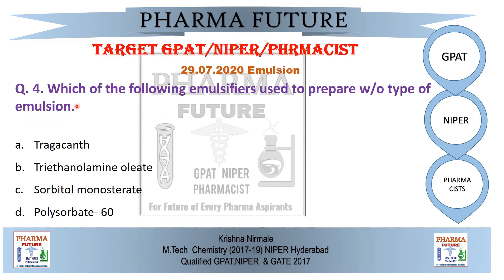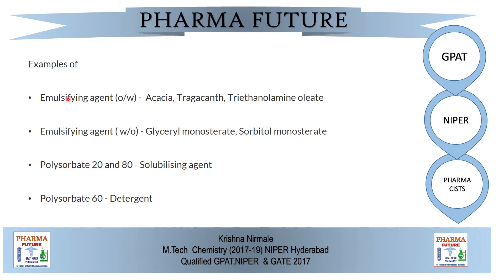Question 4: Which of the following emulsifiers is used to prepare a W/O type emulsion? Option A: tragacanth. Option B: triethylamine oleate. Option C: sorbitan monostearate. Option D: polysorbate 16. Emulsifying agents for O/W emulsions include acacia, tragacanth, and triethylamine oleate. For W/O type emulsions: glycerol monostearate and sorbitan monostearate are used. Polysorbate 20 and 80 act as solubilizing agents, while polysorbate 16 acts as a detergent. Therefore, the correct answer is Option C: sorbitan monostearate.